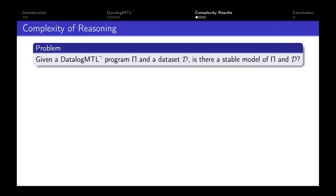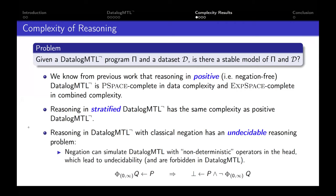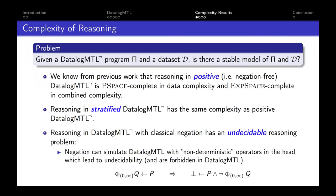The reasoning problem is deciding whether a program and dataset have a stable model — a standard problem for non-monotonic logic. From previous work, reasoning in positive DatalogMTL (without negation) is PSPACE-complete in data complexity and EXPSPACE-complete in combined complexity. With stratified negation, the complexity remains the same over both integers and rationals. Notably, if negation is evaluated classically rather than non-monotonically, we get undecidability, because classical negation can simulate the effect of diamond operators in the head, which is known to lead to undecidability.